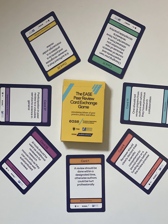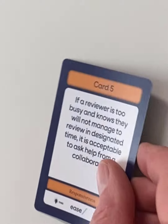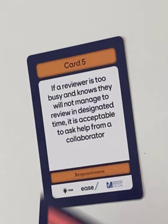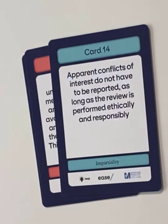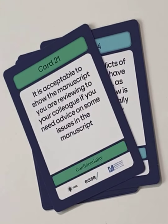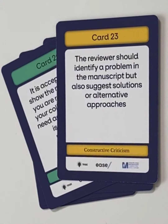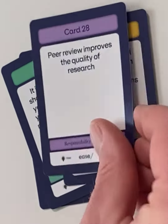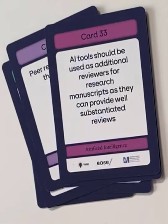The cards are collected into seven categories addressing a wide range of peer review issues: Responsiveness, Competence, Impartiality, Confidentiality, Constructive Criticism, Responsibility to Science, and Artificial Intelligence.